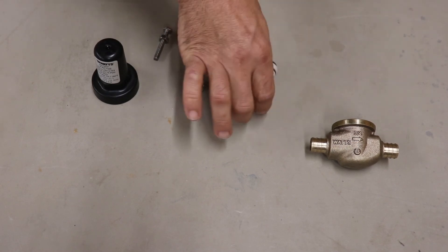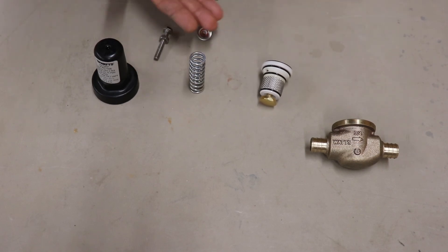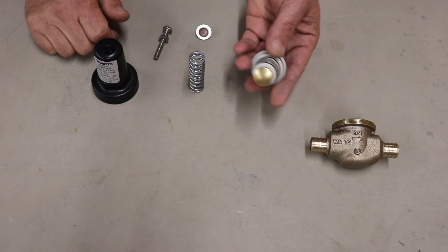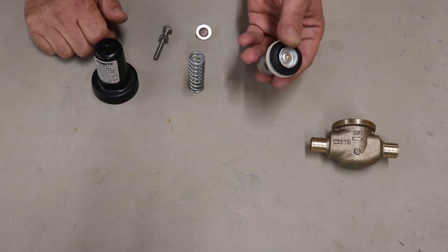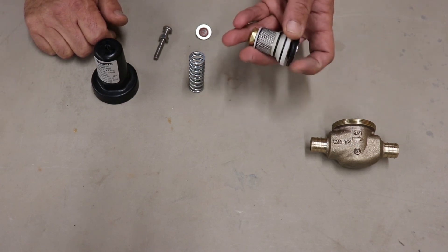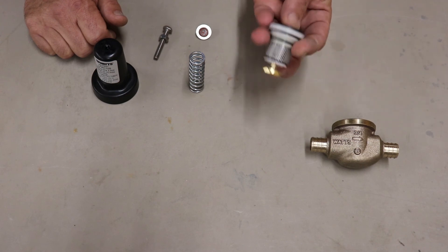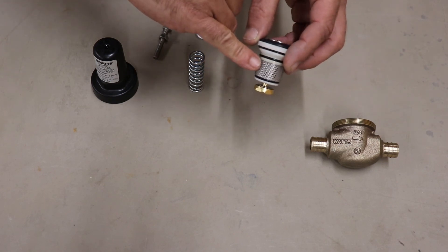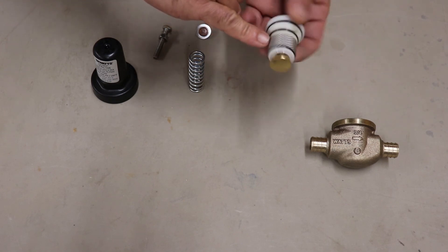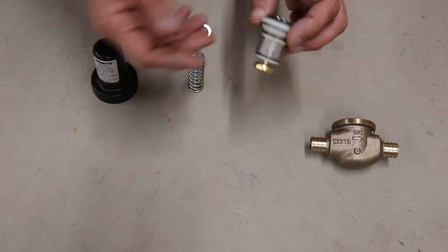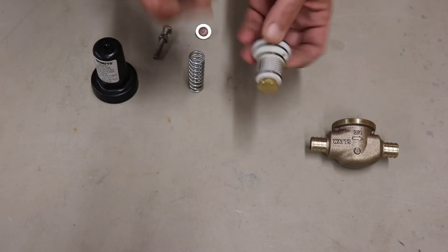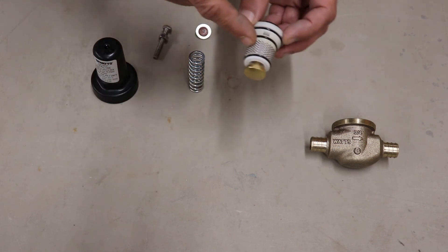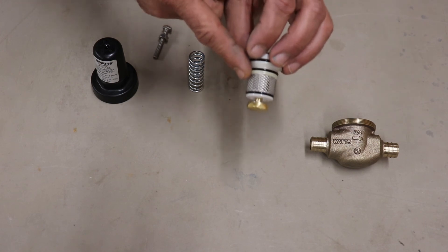The next part here, a lot of things come as a cartridge nowadays so it makes it easier to replace. Now there's a couple pieces in here but you're pretty much not going to take it apart any farther than this. It's got a screen, a filter screen here. Now this is something that can get clogged with sand and dirt and debris either at construction or over time, so if you're having a problem with low pressure you might want to check this screen to make sure it's not full of gunk.